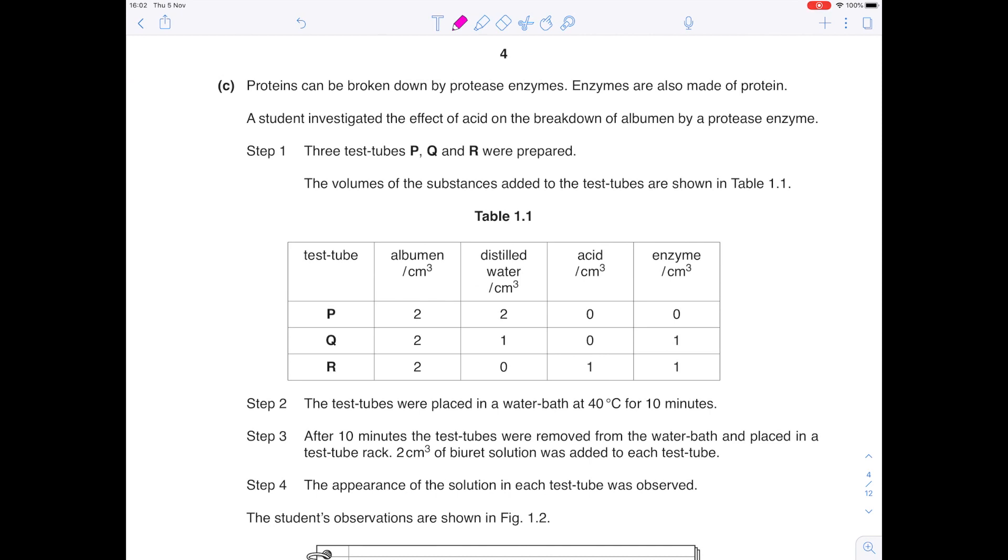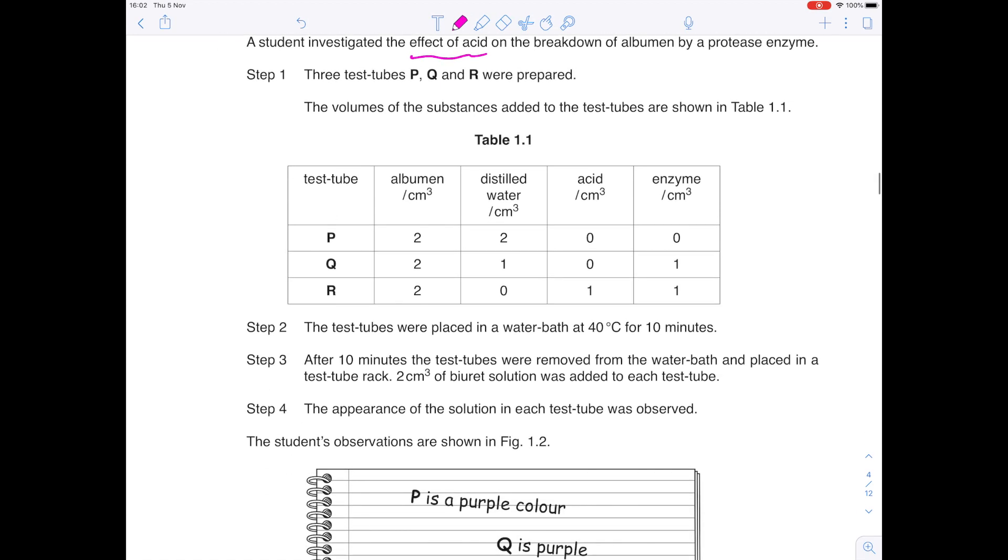Proteins can be broken down by protease enzymes. Enzymes are also made out of protein. A student investigated the effect of acid on the breakdown of albumin by protease enzyme. Three test tubes, P, Q and R, were prepared. The volumes of the substances added to the test tubes are shown in Table 1.1. So in P, we've got the protein, the albumin, some water, no acid, no enzyme. In Q, we've got albumin, distilled water and enzyme. R, we have albumin, acid and enzyme.